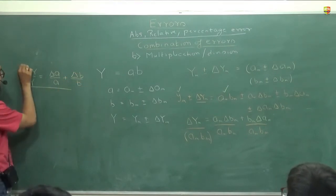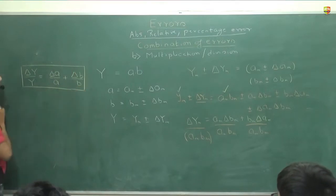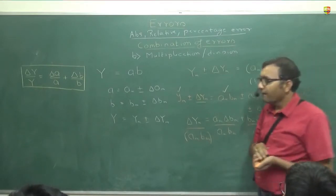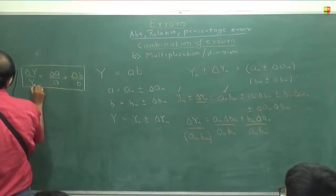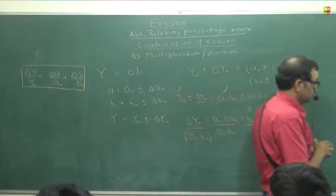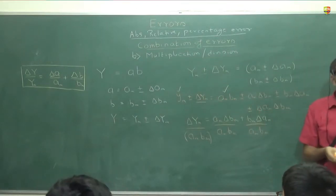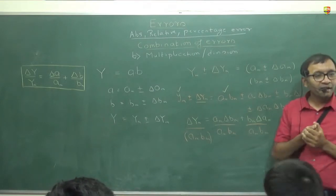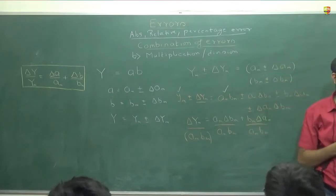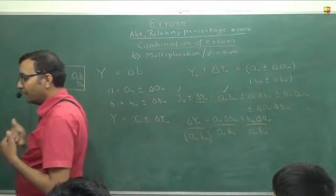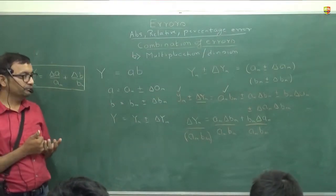So δY/Y equals δA/A plus δB/B. You can't say the absolute errors get added when quantities are multiplied — it is A_mean times δB_mean, not just δB_mean plus δA_mean. The correct way to say it: if two quantities are added or subtracted, their absolute errors get added up. If they are multiplied, their relative errors get added up.